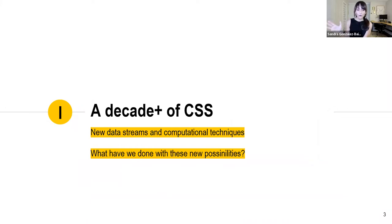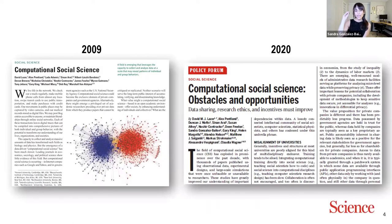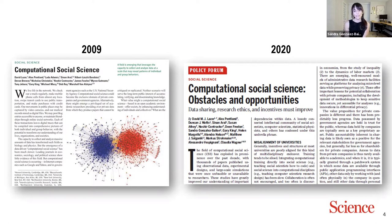Let's start with part one: an overview of the field of computational social science and how it has evolved in the past decade. Two things allowed computational social science to emerge as a field: the emergence of new data streams and new ways of collecting data, and the development of computational techniques that allowed us to exploit those new data resources.